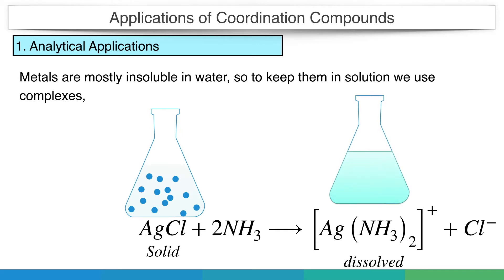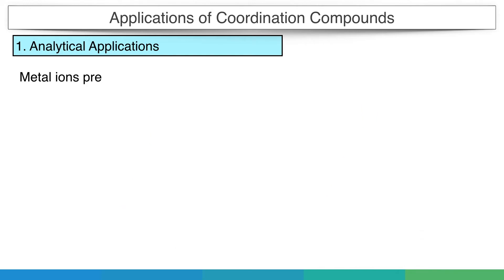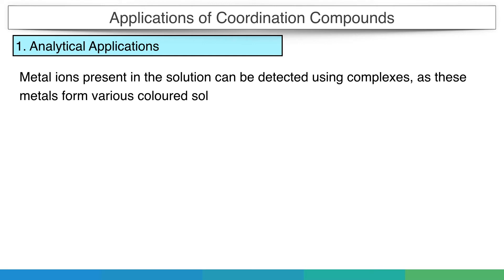The opposite is also applicable - some metals can be precipitated in the form of metal complexes. Metal ions present in solution can be detected using complexes, as these metals form various colored solutions when they are in complex forms.